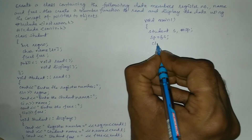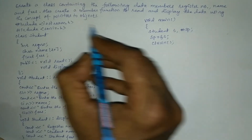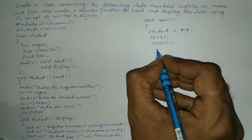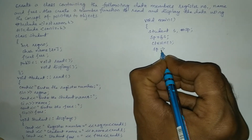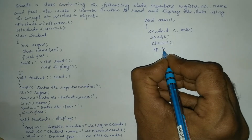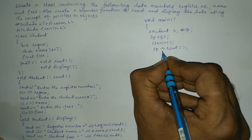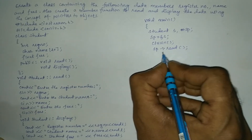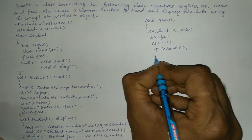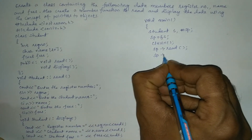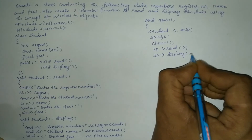We call clrscr() to clear the screen. Whenever we use pointers to objects, we use the member access operator, which is the arrow mark (typed using hyphen and greater-than symbol). So we write sp->read() to call the read function and sp->display() to call the display function, followed by getch().